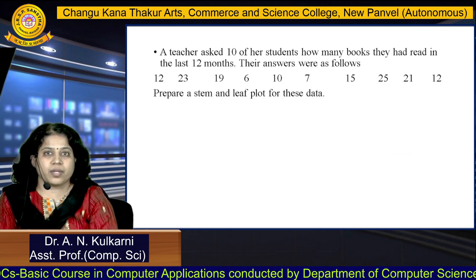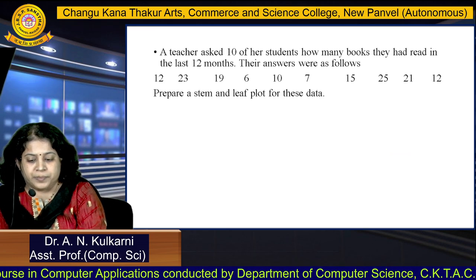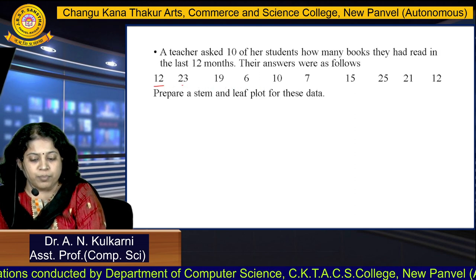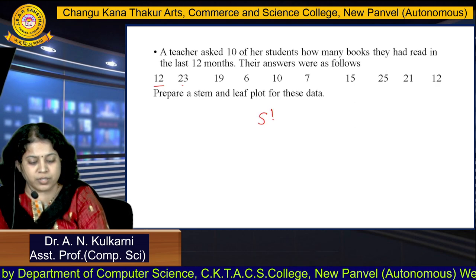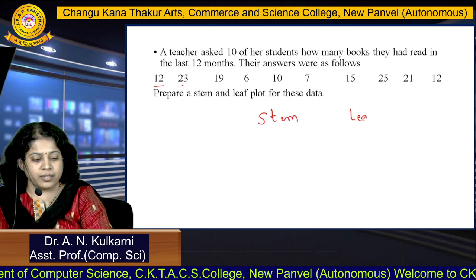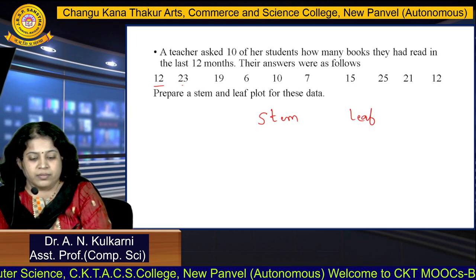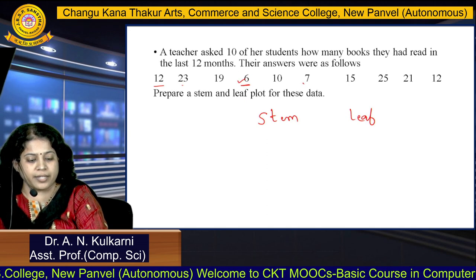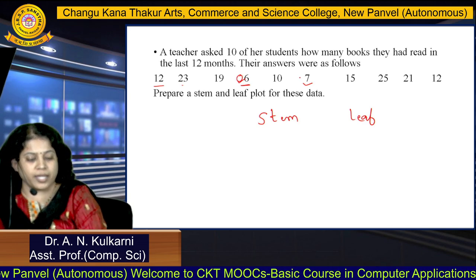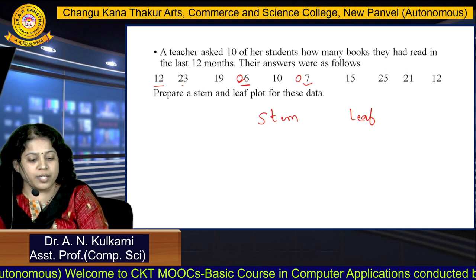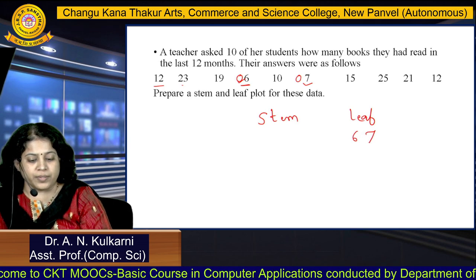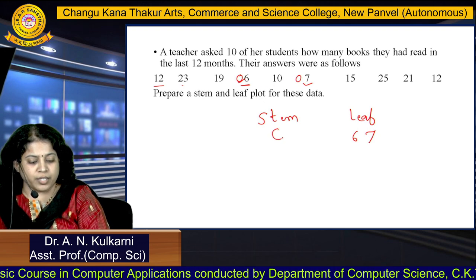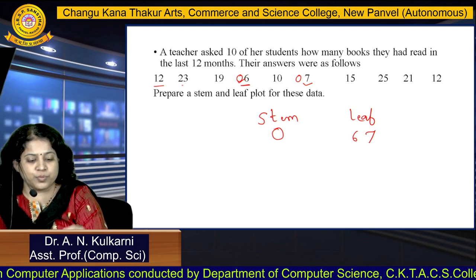See another example. Different data items are given: 12, 23, 19, 16, and others. We have to prepare a stem and leaf plot. Consider ascending order. The smallest values are 6 and 7 — these are 06 and 07. The leaf for these two data items are 6 and 7, but the stem is 0, which is common for both, so write it only once. This is the first stem and leaf grouping.